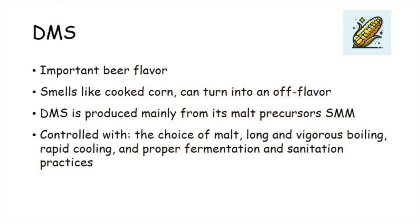In sum, DMS is an important beer flavor. It smells like cooked corn and can turn into an off-flavor if its concentration exceeds threshold levels. It is produced mainly from its malt precursor SMM. Its levels can be controlled with the choice of malt, long and vigorous boiling, rapid cooling, and proper fermentation and sanitation practices.